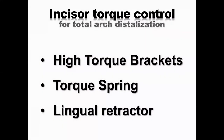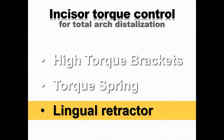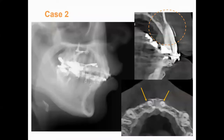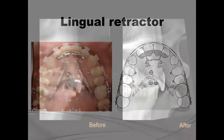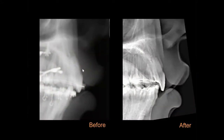Finally, there is a way to use a lingual retractor. CBCT showed the root of the maxillary central incisor almost outside of the cortical bone. The lingual retractor has a pad on the anterior segment with a long arm, and force is delivered to the center of resistance of the anterior segment. These are before and after cephalograms showing improvement of the maxillary central incisor inclination using the lingual retractor. After treatment, you can see improvement of inclination.